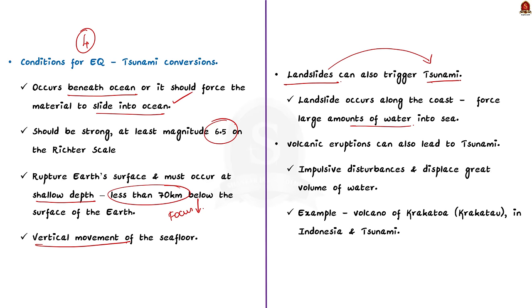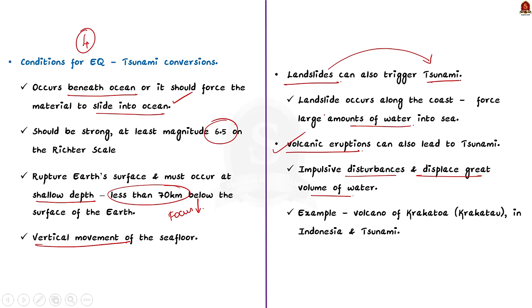Volcanic eruptions can also cause tsunamis. The eruptions create impulsive disturbances and displace large volumes of water, generating extremely destructive tsunami waves in the immediate source area. For example, in 1883 in Indonesia, the Krakatoa volcano erupted and created huge tsunami waves.